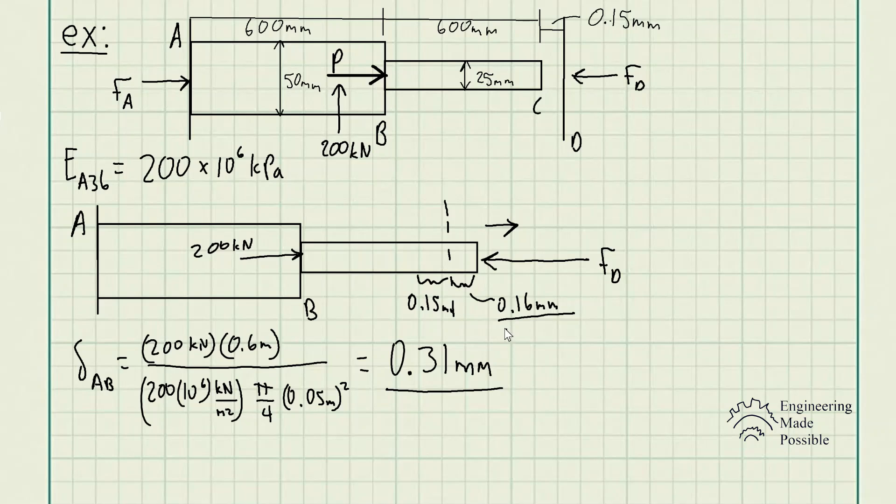It gets a little bit tricky when you're dealing with a gap. Keep in mind you do have that initial gap and that initial deformation does not contribute at all to this reactionary force because there is that gap. That's why it's always good to solve for the total deformation initially. And how much force would you require to deform it back to where that wall was, in this case 0.16 millimeters.